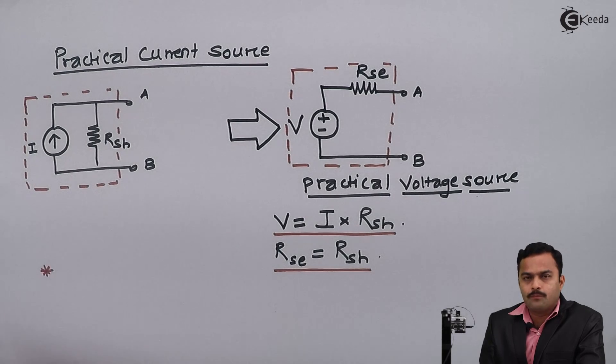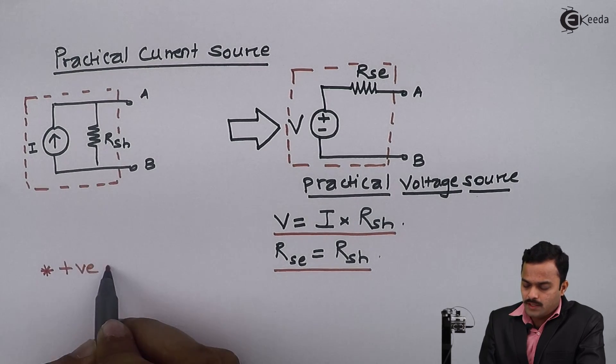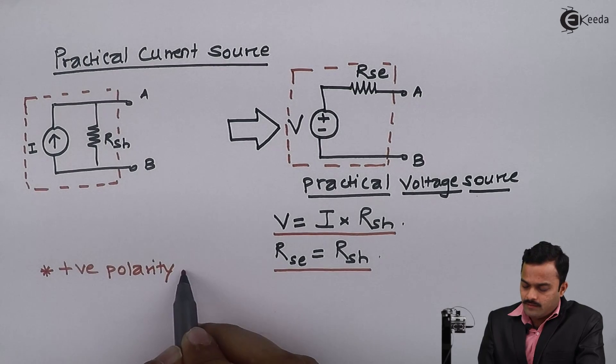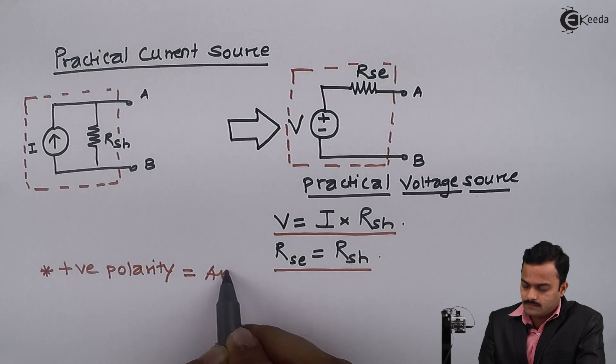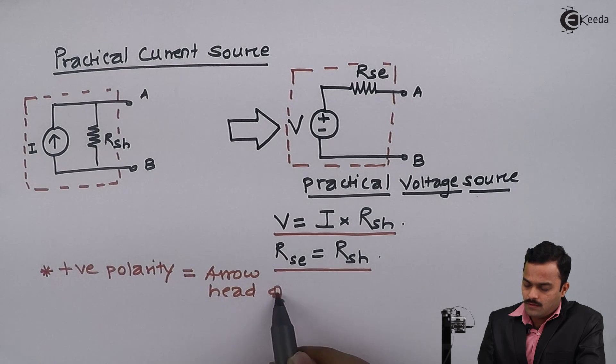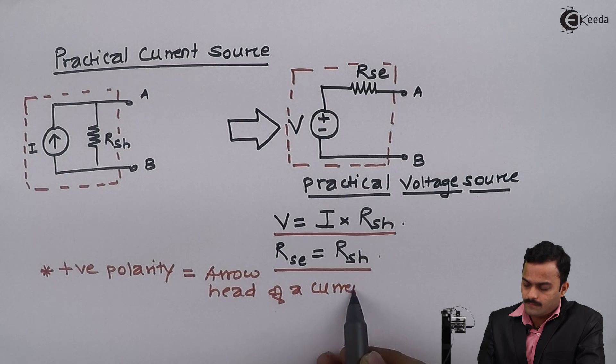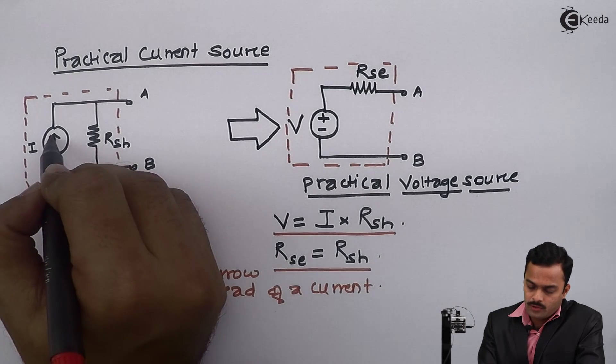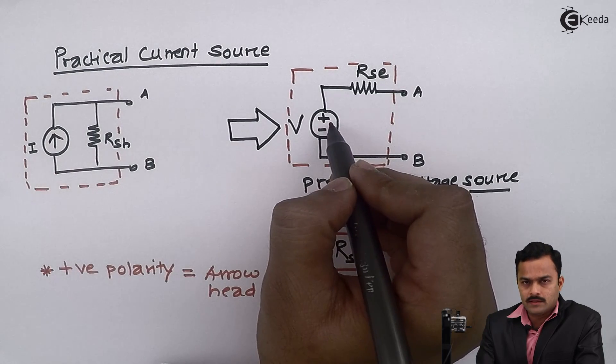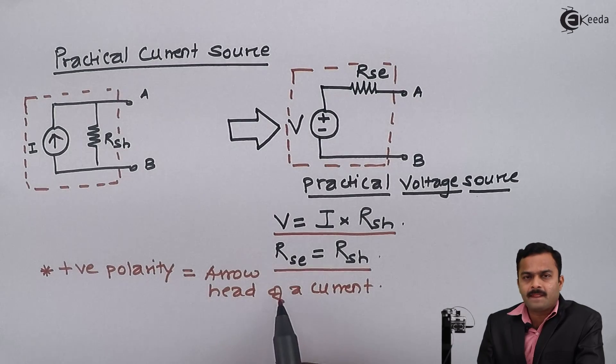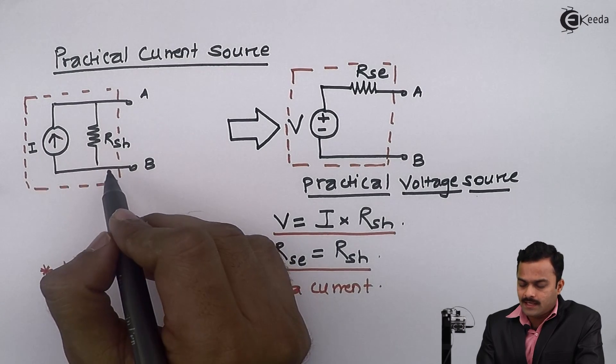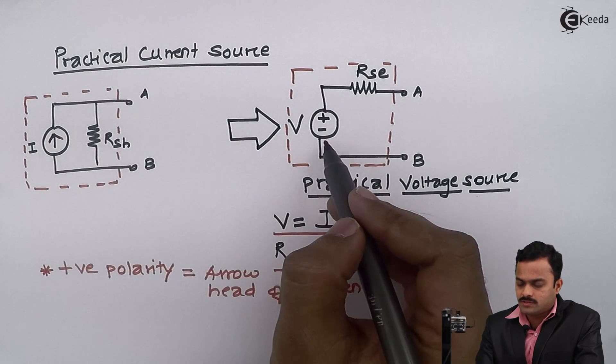And how to determine the polarity? Positive polarity you are getting at the arrowhead. Arrowhead of a current. What does that mean? Here arrowhead is upward, therefore positive polarity is upward. Considering these three things, any current source in this manner I can convert into an equivalent voltage source like this.